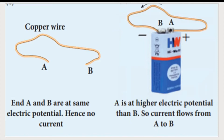Let us consider a copper wire. We know that copper is the best conductor of electricity. In normal condition, both ends of the copper wire are at the same potential, so we cannot realize any electric current. As per the atomic structure of copper, there will be more free electrons, and these free electrons can move easily.